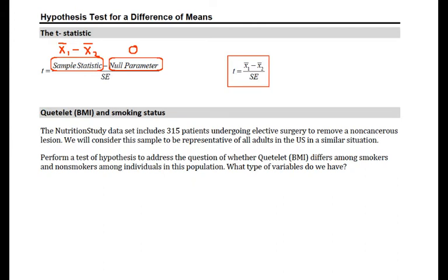Going into an example, the nutrition study data set includes patients that are undergoing elective surgery to remove a non-cancerous lesion. We can't necessarily assume that this is representative of all adults in the US, so we will just assume that any inference we do is subject to a kind of hypothetical population of people who would be going under this similar kind of surgery. We're going to perform a test of hypothesis to address the question of whether Quetelet, which is a fancy name for BMI, body mass index, named after, I believe, the French individual who defined it, differs among smokers and non-smokers among individuals in this population.